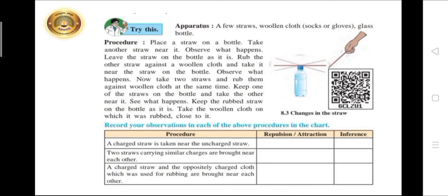Leave the straw on the bottle as it is. Rub the other straw against a woolen cloth and take it near the straw on the bottle. Observe what happens. Now take two straws and rub them against woolen cloth at the same time. Keep one of the straws on the bottle and take the other near it. See what happens.